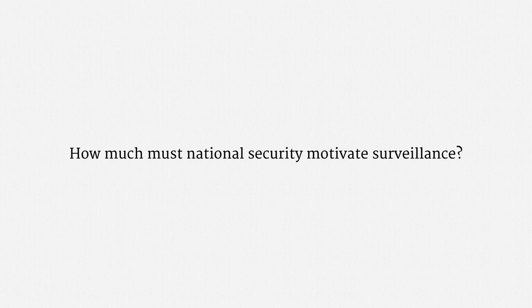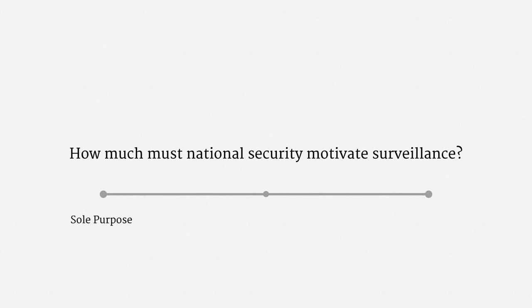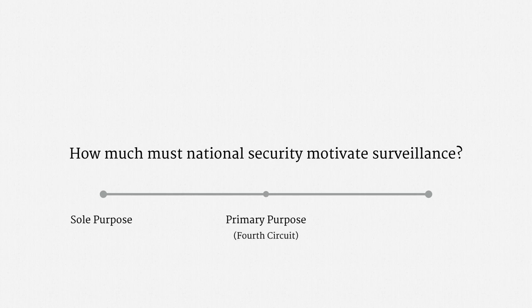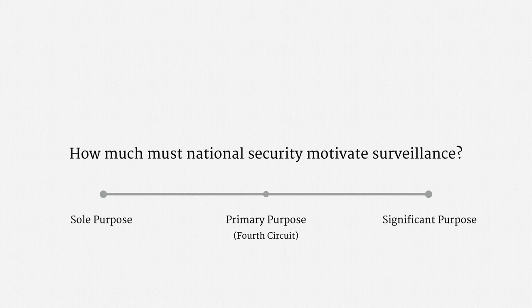A closely related challenge is just how much must national security motivate surveillance to qualify for the exception. There's roughly a spectrum of views. At one end, national security has to be the sole purpose — if there's any law enforcement involvement, the exception is unavailable. In the middle is the notion that surveillance has to be primarily motivated by national security to qualify; the Fourth Circuit adopted that view, and it's been reflected in parts of FISA. Finally, at the far end, national security just has to be a significant purpose for the surveillance — the primary purpose could be law enforcement. That's the view the FISA Court of Review adopted, and it's also suggested by revisions to FISA.